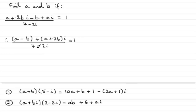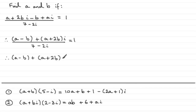Now what I'll do is get rid of this fraction — 7 minus 2i — by multiplying both sides by 7 minus 2i. So we have a minus b plus a plus 2b (the imaginary part) equals 1 times 7 minus 2i, so it's just going to be 7 minus 2i.